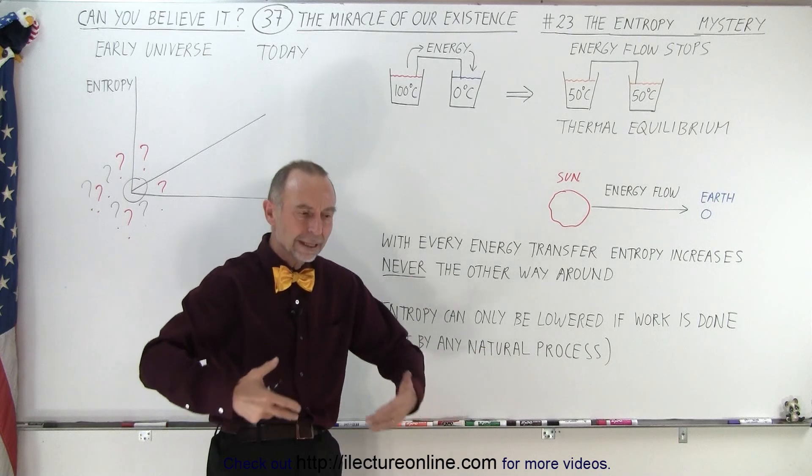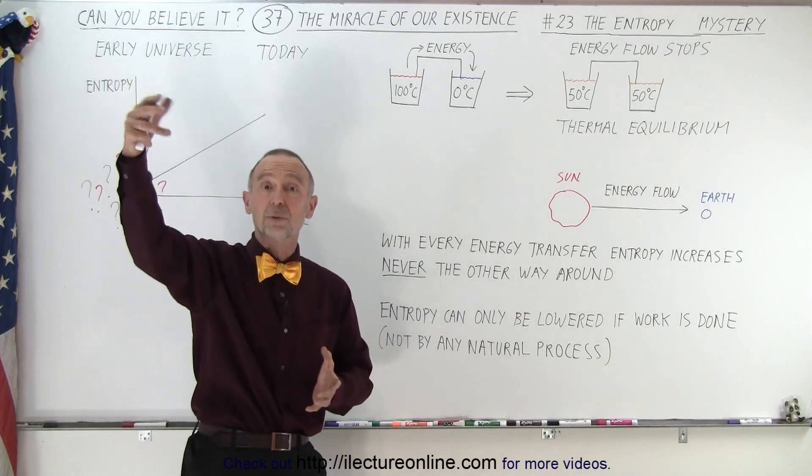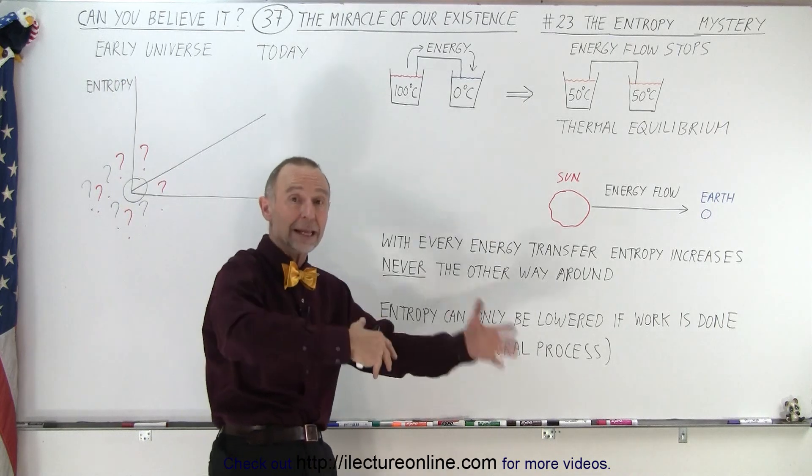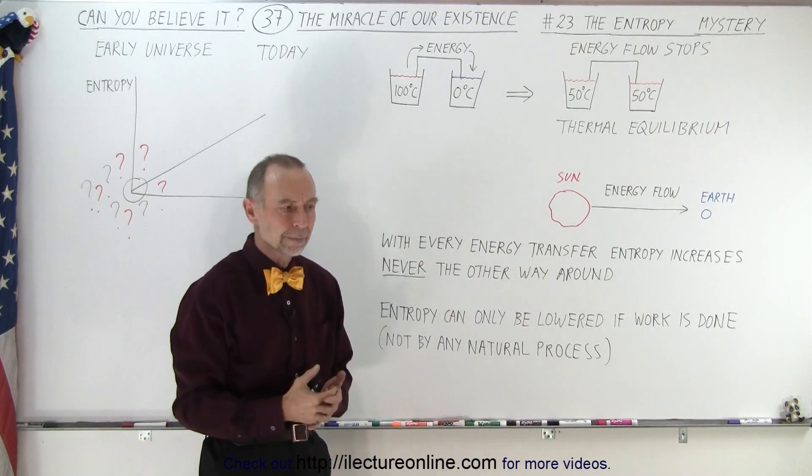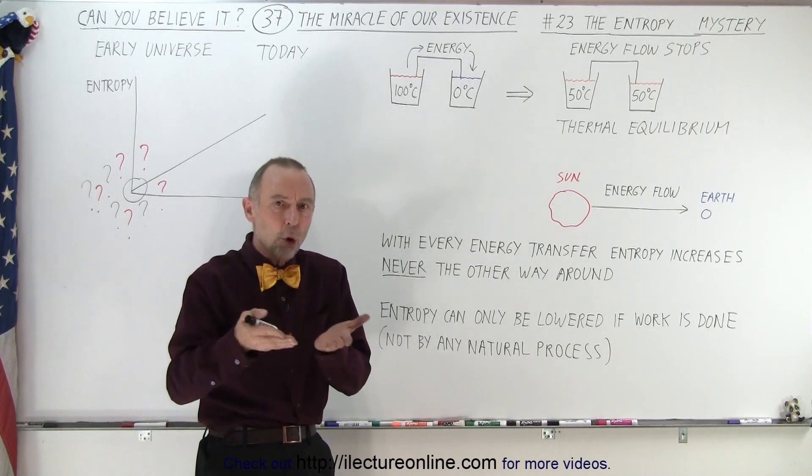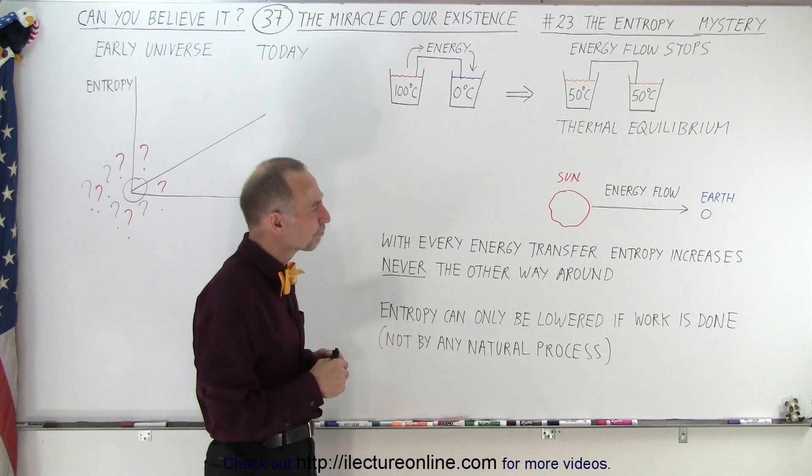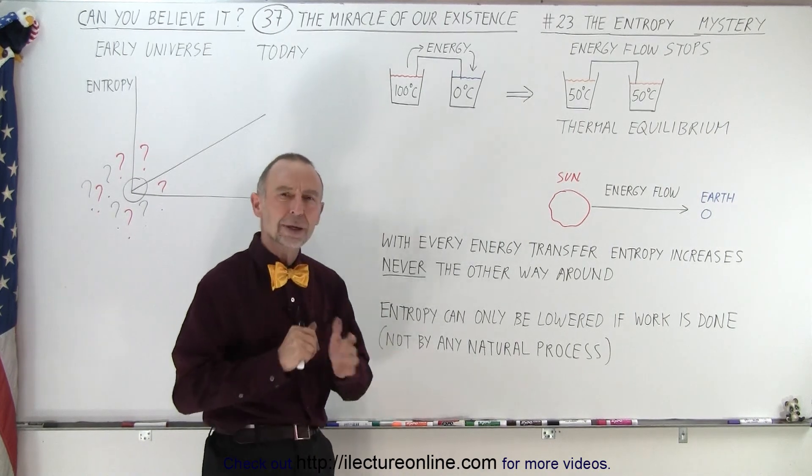So through the entire history of the universe, energy has always been transferred from where it's hot, where the stars are, to where it's cold, where the planets and the moons and the asteroids are. And so that process continues and the entropy of the universe always increases and increases and increases, never the other way around.